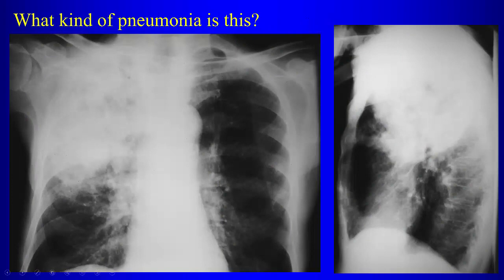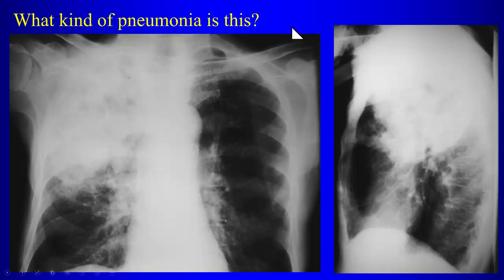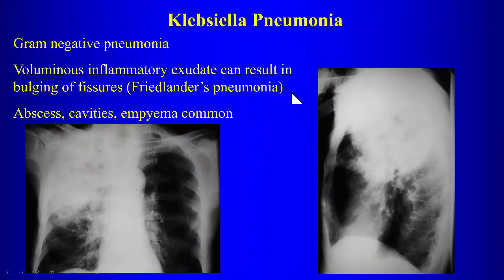If this is pneumonia, what is unusual about the appearance? There's mass effect on the major fissure here — this is called Friedlander's pneumonia. The classic organism is Klebsiella. The idea is that these organisms cause exuberant consolidation that can result in mass effect, actually enlarging the lobe. It's associated with complications: abscesses, cavities, and empyema are all common.